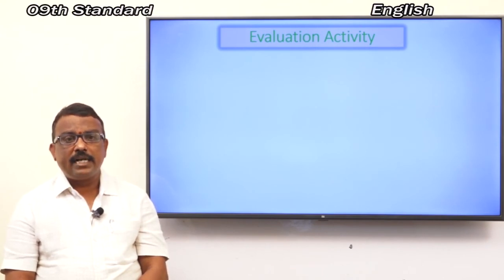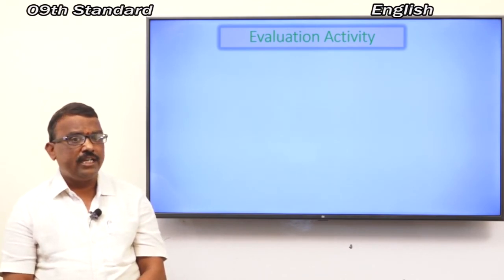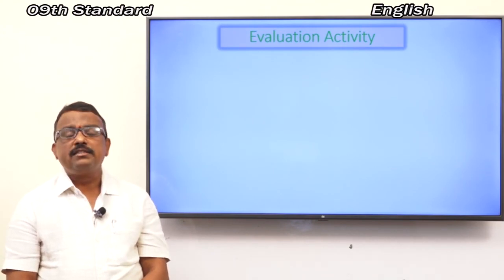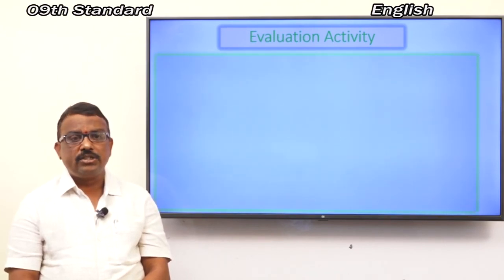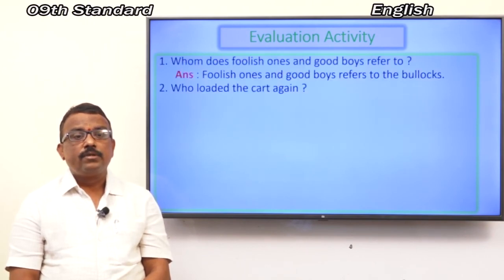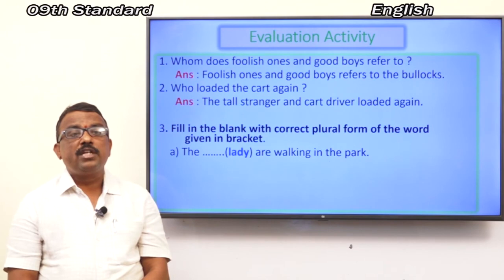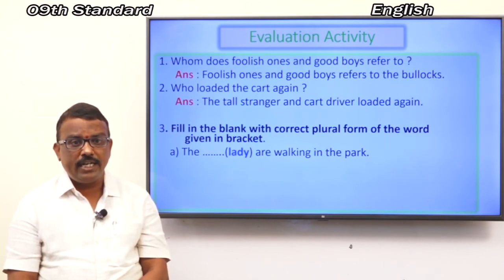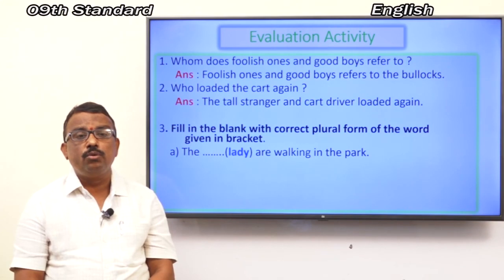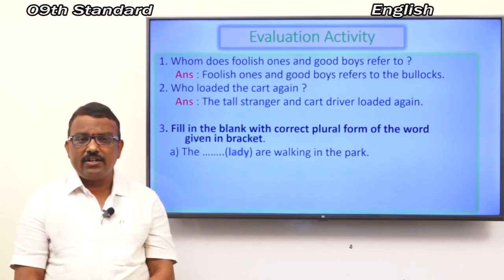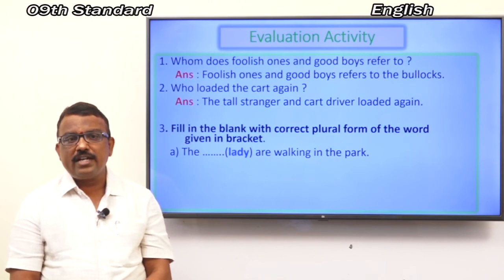I think you better understand the lesson. Now it is time for evaluation — to check what you understood in this session. See the questions. First: whom do 'foolish ones' and 'good boys' refer to? The cart driver said this — he was referring to the bullocks. Second: who loaded the cart again? The tall stranger and the cart driver loaded it again together.